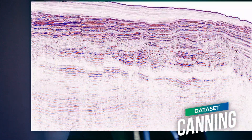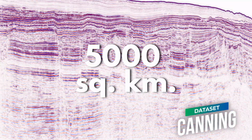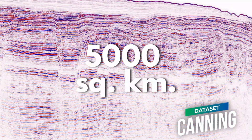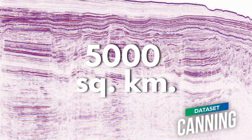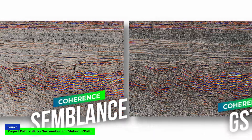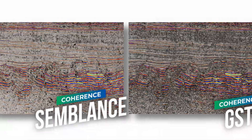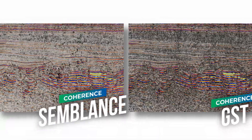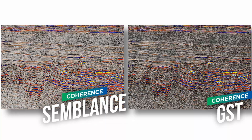Let's take, for example, the Canning dataset from northwest of Australia. The dataset covers a substantial amount of area — almost 5000 square kilometers. That is why it will require from us weeks or even months of interpretation work. There are a variety of conventional attributes that we can use to expedite fault identification.